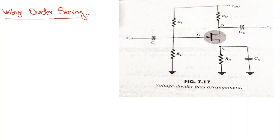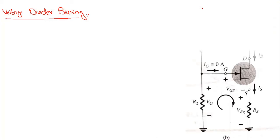The VDD is connected to both R1 and RD, so I can separately connect RD to these two devices. When I simplify, I am going to have a figure where C1, C2, and CS have been removed and VDD has been separately connected to R1 and RD.